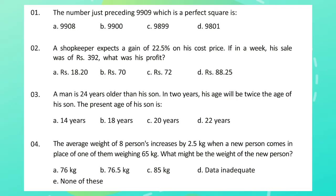Question 1: The number just preceding 9909 which is a perfect square is? Question 2: A shopkeeper expects a gain of 22.5 percent on his cost price. If in a week his sale was rupees 392, what was his profit? Question 3: A man is 24 years older than his son. In two years, his age will be twice the age of his son.